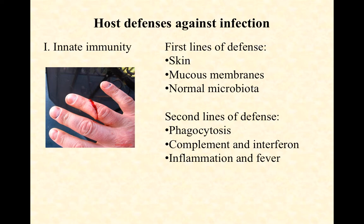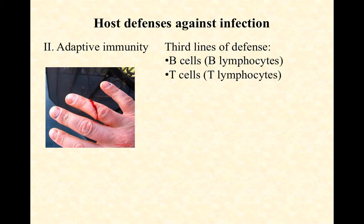We also have complement and interferon, two antimicrobial protein categories, and then the systemic responses of inflammation and fever. Now, assuming a pathogen gets past those first two lines of defense — which we know at some frequency they do, because most of us get sick at least a couple times every year — then our adaptive immune system kicks in as our third line of defense.